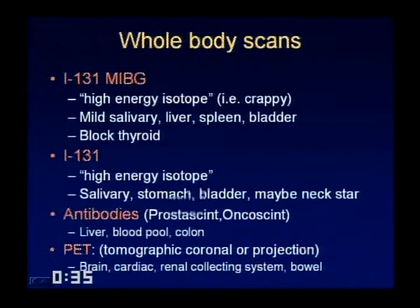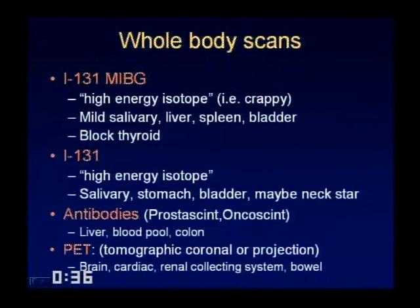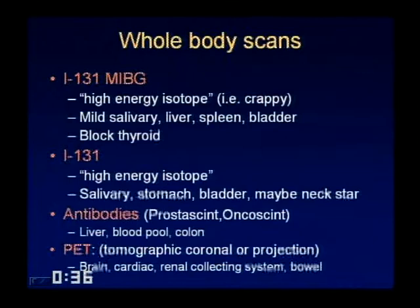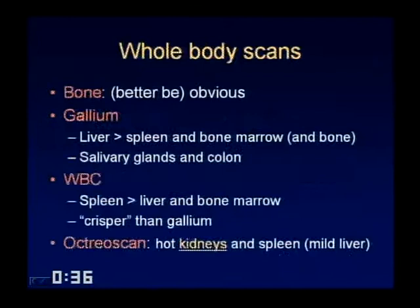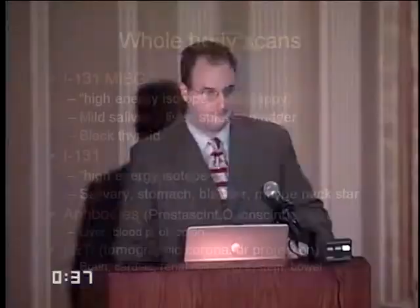PET is a whole-body scan but it's tomographic coronal slices or a rotating whole projection image, so you shouldn't be confused with that. Sulfur colloid and HIDA, red cell, and Meckel scans are typically coned down to the abdomen or are dynamic, so you shouldn't be confused with those either. Summary: whole-body static planar views — bone is obvious; gallium and white cells look similar, differentiated by liver vs. spleen dominance and colon activity; octreotide has hot kidneys and spleen; the high-energy crappy scans are differentiated by salivary/thyroid vs. liver distribution; and antibodies show liver and blood pool. Now reviewing: a scan is identified as a high-energy MIBG scan showing an adrenal lesion — the student correctly identifies this as a pheochromocytoma.